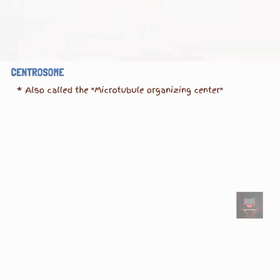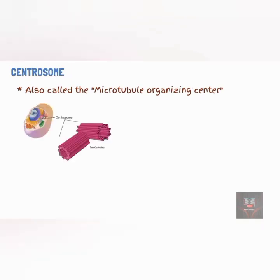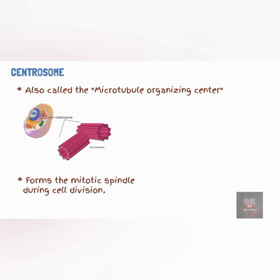Centrosomes, also called the microtubule organizing center, are located near the nucleus and consist of a pair of centrioles and a pericentriolar matrix. The centrosome forms the mitotic spindle that helps cells separate during cell division. It also builds microtubules in non-dividing cells, which help with cellular movement and transportation.